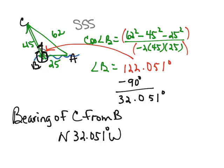If we wanted to write it just as an angle measure, we could have said the bearing is 360 minus the 32.051, which would be a bearing of 327.949 degrees. And that would be this angle measured from north all the way around to point C.